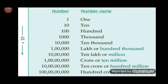Let's have a look at this chart. Number name 1, number 1. Next number name 10, number 10. Then 100, 1000, 10,000. Then lakh or 100,000. Then 10 lakh or million. Crore or 10 million. 10 crore or 100 million. 100 crore or billion.